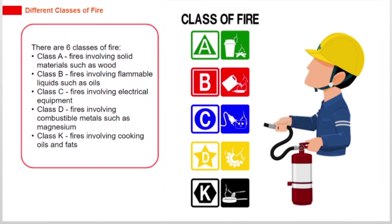There are six classes of fire. Class A fires involve solid materials such as wood. Class B fires involve flammable liquids such as oils. Class C fires involve electrical equipment. Class D fires involve combustible metals such as magnesium. Class K fires involve cooking oils and fats.